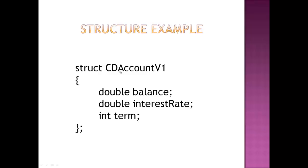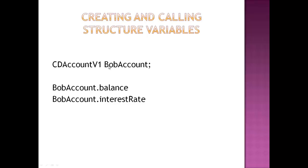Going back to why we don't call it CDAccountV1 directly — the structure itself is a variable that other programs or things can use. So we give it a variable name. CDAccountV1 is going to be called BobAccount, and then I can do BobAccount.Balance, BobAccount.InterestRate. I can also do CDAccountV1 JohnAccount and CDAccountV1 FrankAccount. So I can use the structure as a variable to create groupings — Bob can have his three variables and Frank can have his three variables: balance, interest rate, and term.